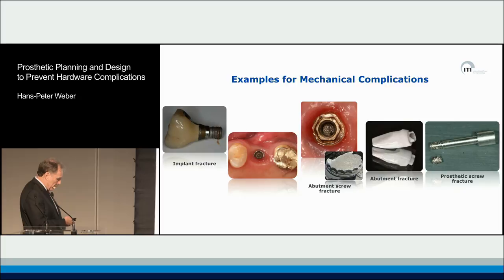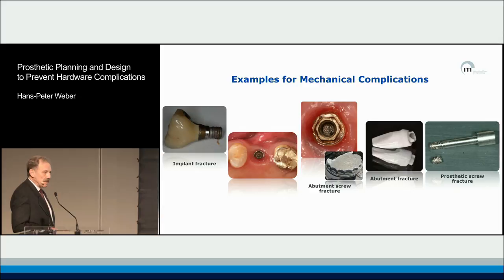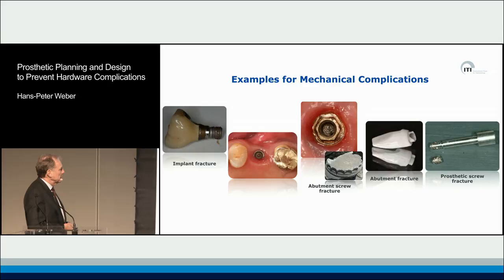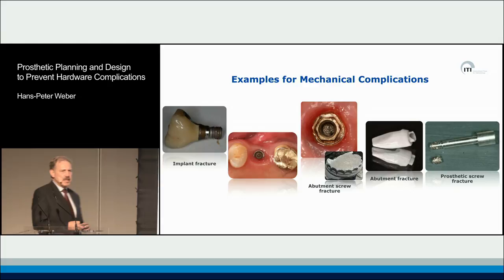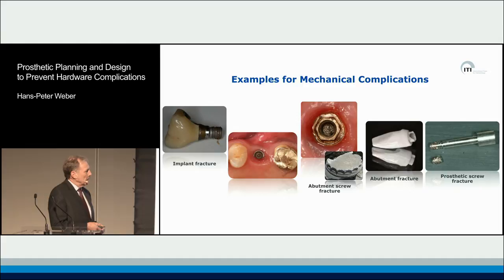Examples of mechanical failures include implant fracture, and another example is a tissue-level implant where half of the top sheared off — more likely to happen in severe bruxing patients. Additional examples are abutment screw fractures, abutment fractures themselves (which we see more with the advent of zirconia), and prosthetic screw fractures.